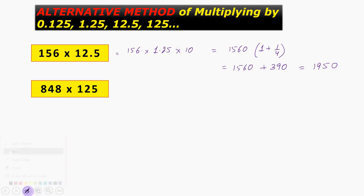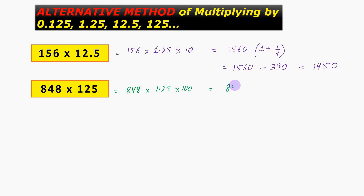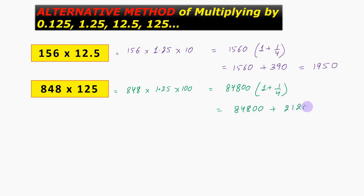For the next question we can write it as 848 into 1.25 into 100, so we have 84800 into 1 plus 1 by 4. This gives us 84800 plus 21200, and adding these two numbers we get the answer as 106000.